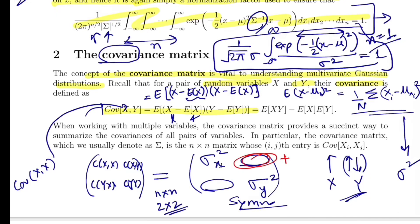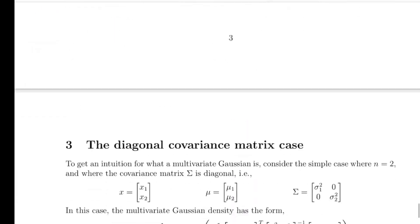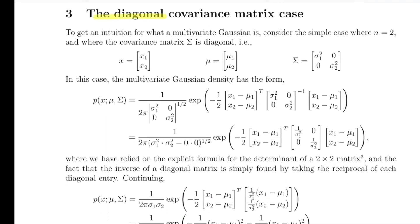If the off-diagonal values are positive, that means a positive covariance — if you vary x, y also increases in the same direction. If those values are negative, then when one variable increases, the other decreases. This is the kind of relationship you extract from the covariance matrix — that is the full idea of it.